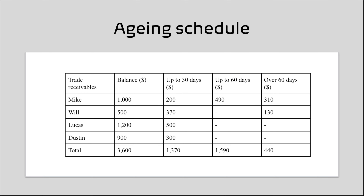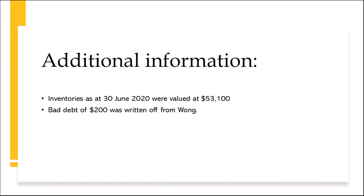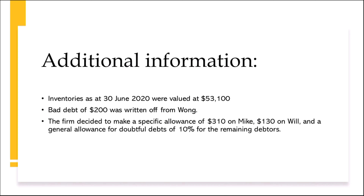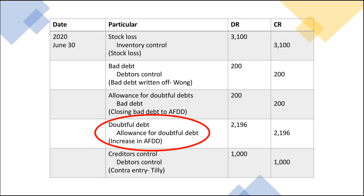After creating an ageing schedule, the business decided to allocate a specific allowance for two of their debtors, as well as a 10% general allowance. This is then recorded into the General Journal as can be seen here.